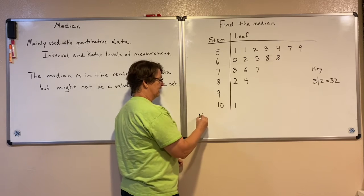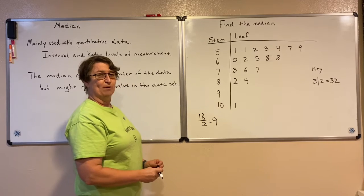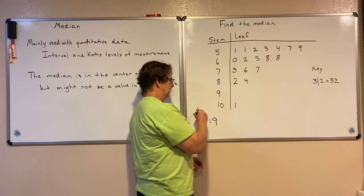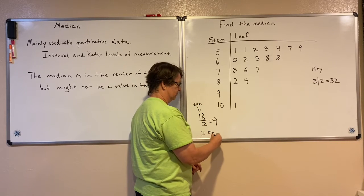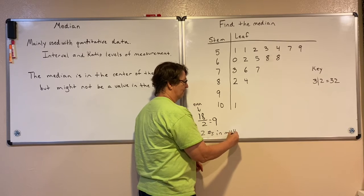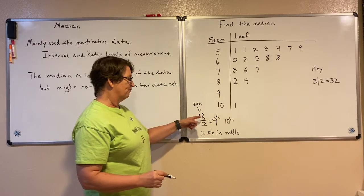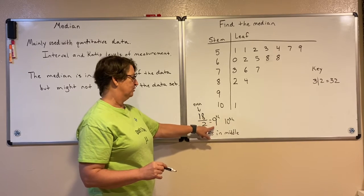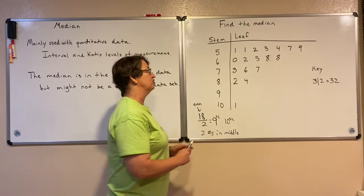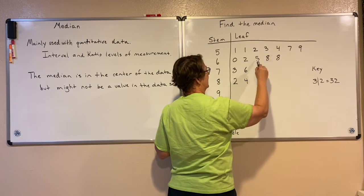I'm going to take that 18 and divide it by 2 so I know exactly where I need to go for my median. Because this is even, I know there will be two numbers in the middle. So I'm going to be looking at my 9th one, but also my 10th one. If this had been odd, I'd just round up the result and that tells me exactly where I need to be. So counting: 1, 2, 3, 4, 5, 6, 7, 8, nine, and 10.